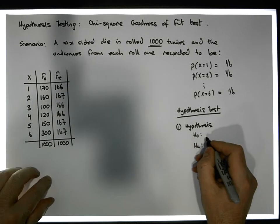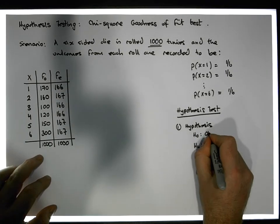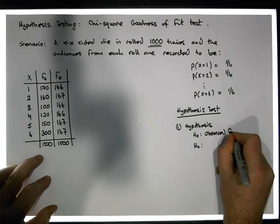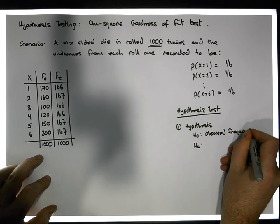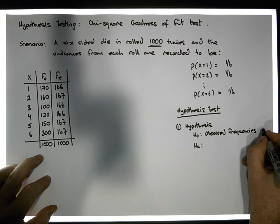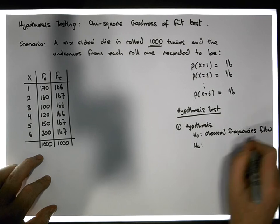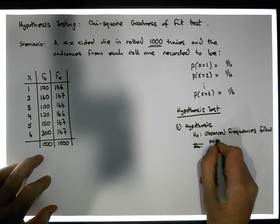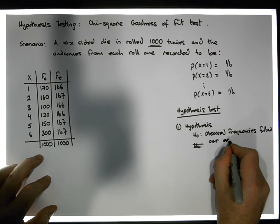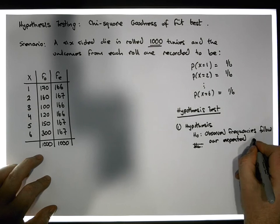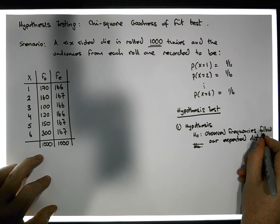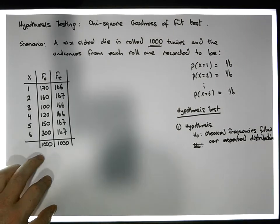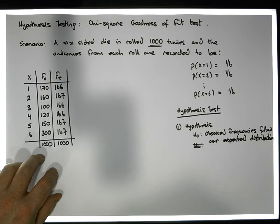To write that down: the observed frequencies follow the expected distribution. In other words, that there is fit between the two distributions.